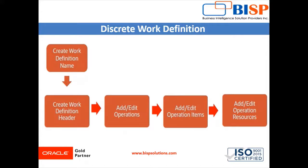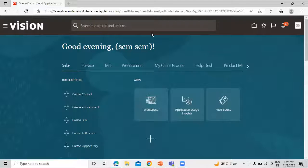We have to perform certain tasks for creating the discrete work definition. First of all, we have to create a definition name. After that, we have to create the definition header. Then we have to add the operations — we already seen in our last session how to create standard operations. Later on, we are going to add the item to the operations and add the operation resource to this work definition. So let's move on to the application and we'll see one by one all the tasks.